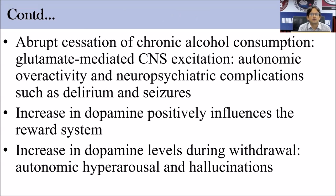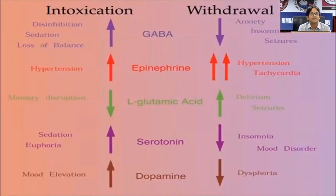Chronic ethanol use is also known to cause increased dopamine in the reward system. However, increased dopamine during withdrawal causes autonomic hyperarousal as well as psychotic symptoms like hallucinations. In summary: during intoxication, GABA is increased, epinephrine is increased, and glutamate is decreased. During withdrawal, GABA activity is decreased — causing anxiety, insomnia, and seizures — while glutamate is increased, causing delirium and seizures.